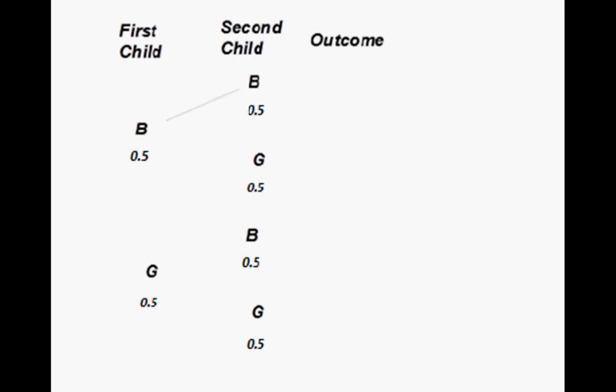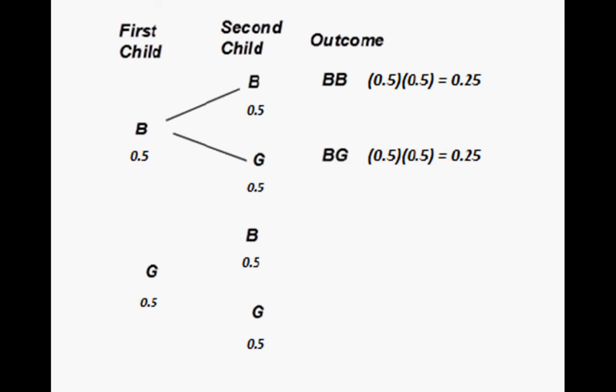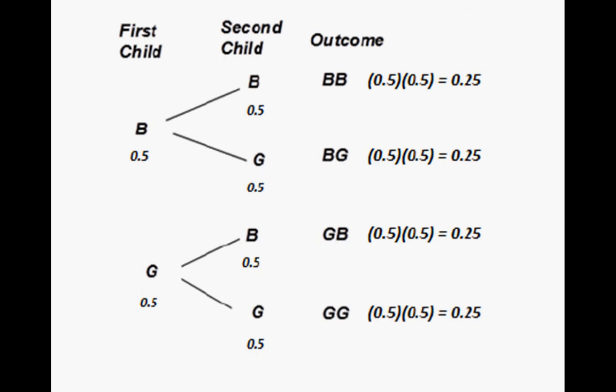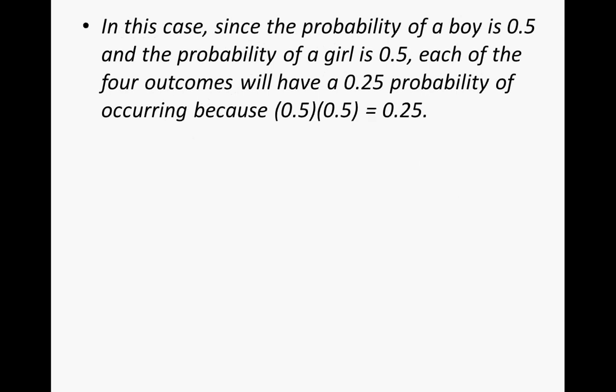So what is the outcome? Having a boy then a boy would be 0.5 times 0.5, which equals 0.25, or 25%. Having a boy then a girl is the same. Having a girl then a boy is the same probability, and having a girl then a girl is also 0.25. Since the probability of a boy is 0.5 and the probability of a girl is 0.5, each of the four outcomes has a 0.25 probability of occurring.